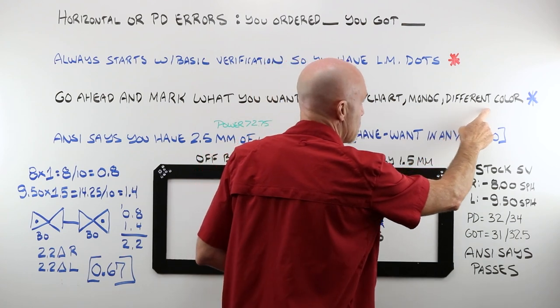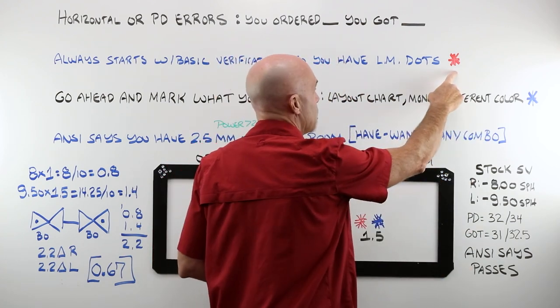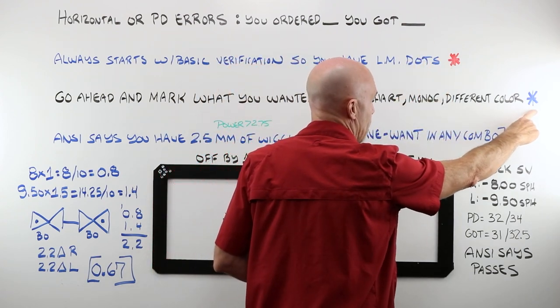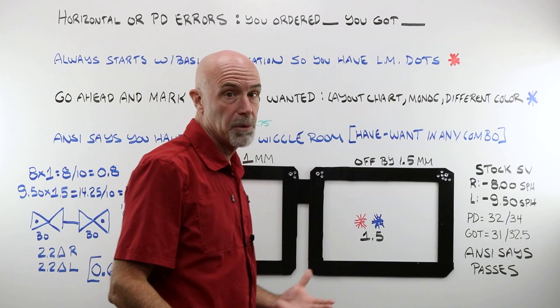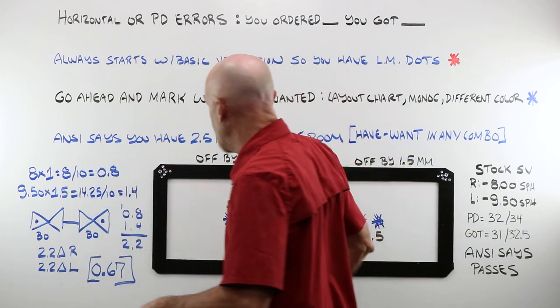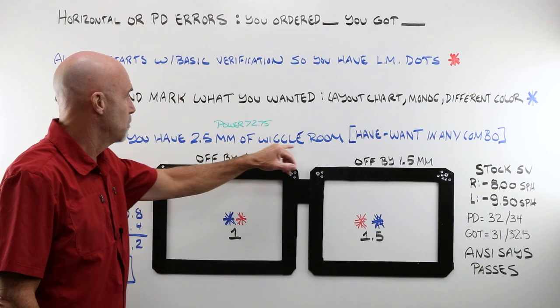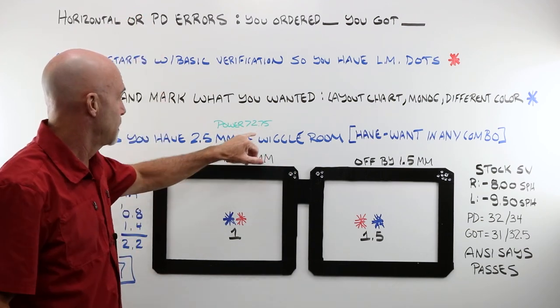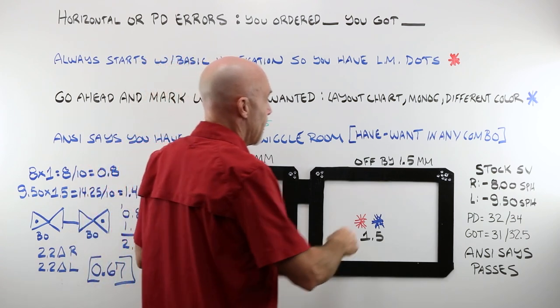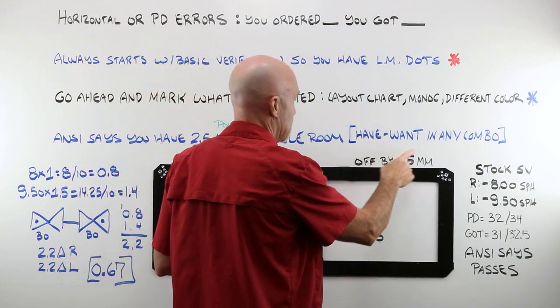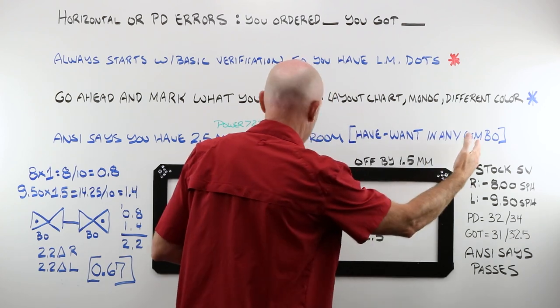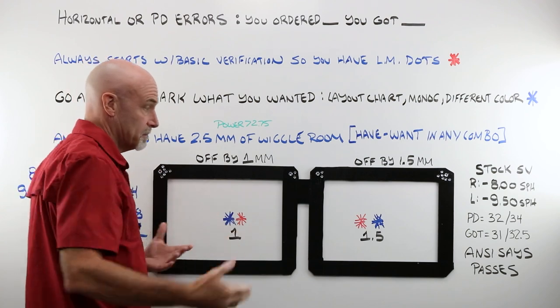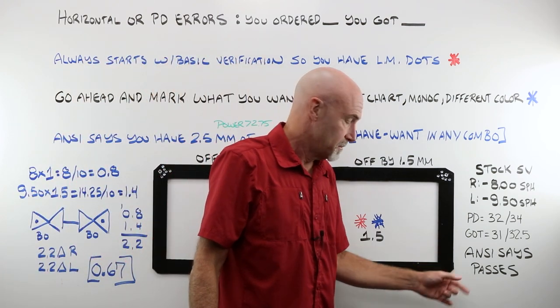And I would strongly urge you to use a different color. Your lens meter ink pens may be white, may be black, may be red. Choose a different AR pen color so that you can tell the two apart. ANSI says that you have two and a half millimeters of wiggle room in powers even greater than 2.75. And just take what you have, subtract what you wanted. And any combination that falls two and a half millimeters or under, according to ANSI, passes.